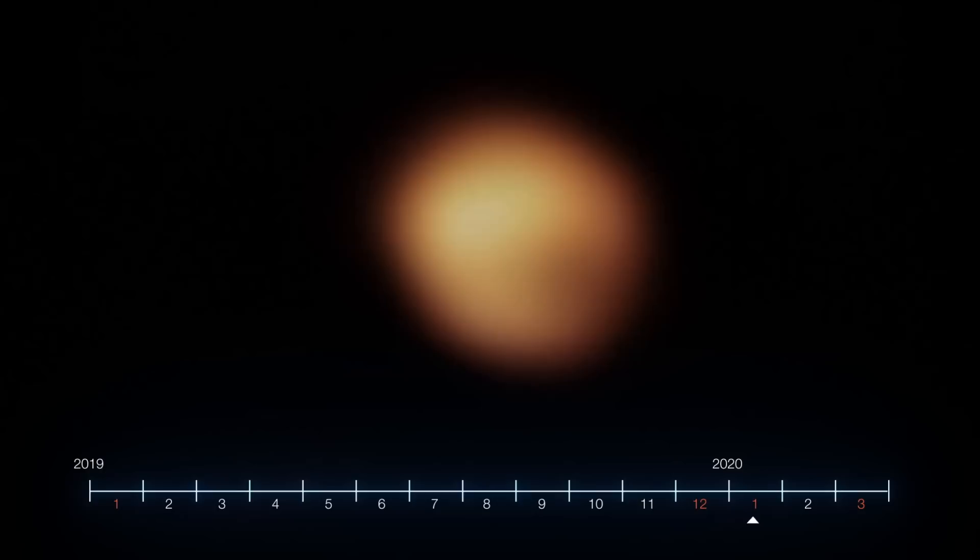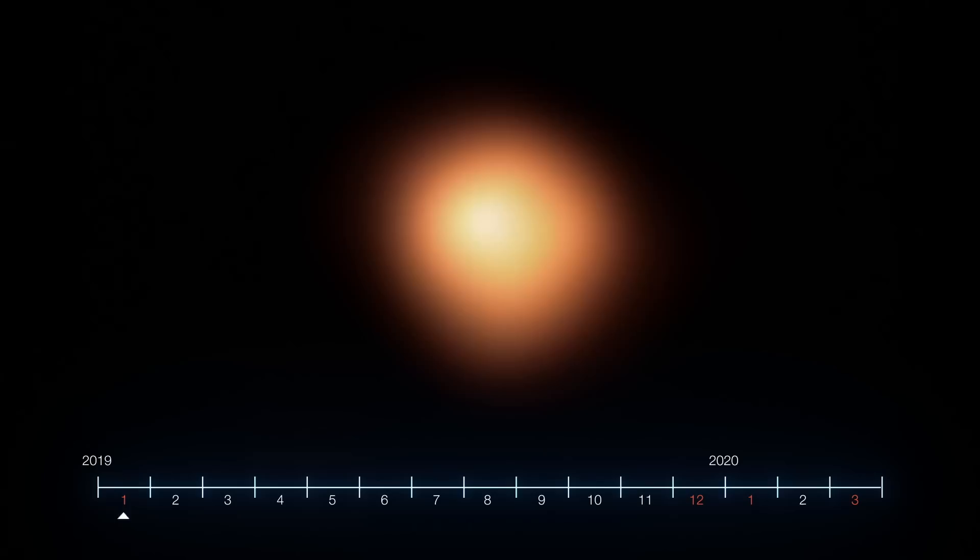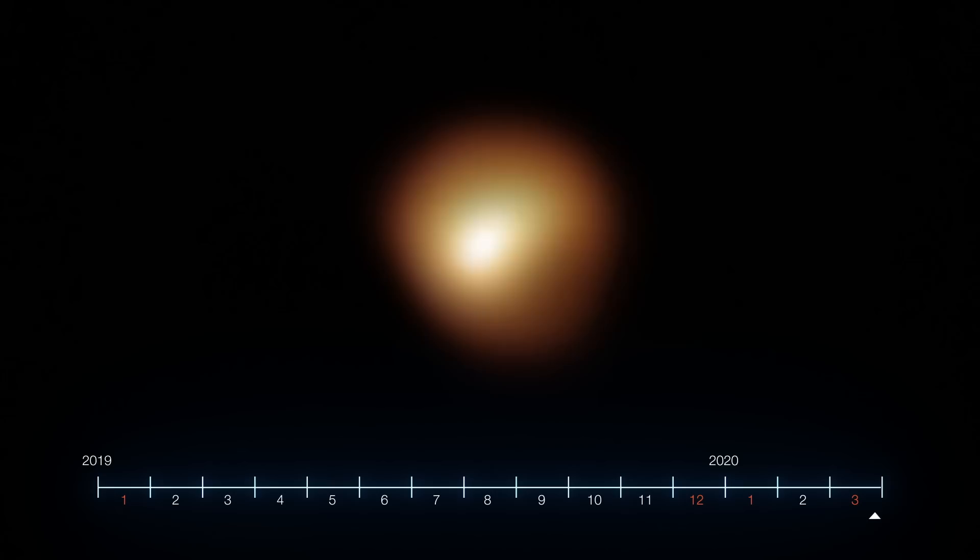To give you a clear estimate, Betelgeuse began a rapid decrease in its brightness in October 2019, and by mid-February 2020, had lost roughly three times as much brightness, going from a magnitude 0.5 to magnitude 1.7.